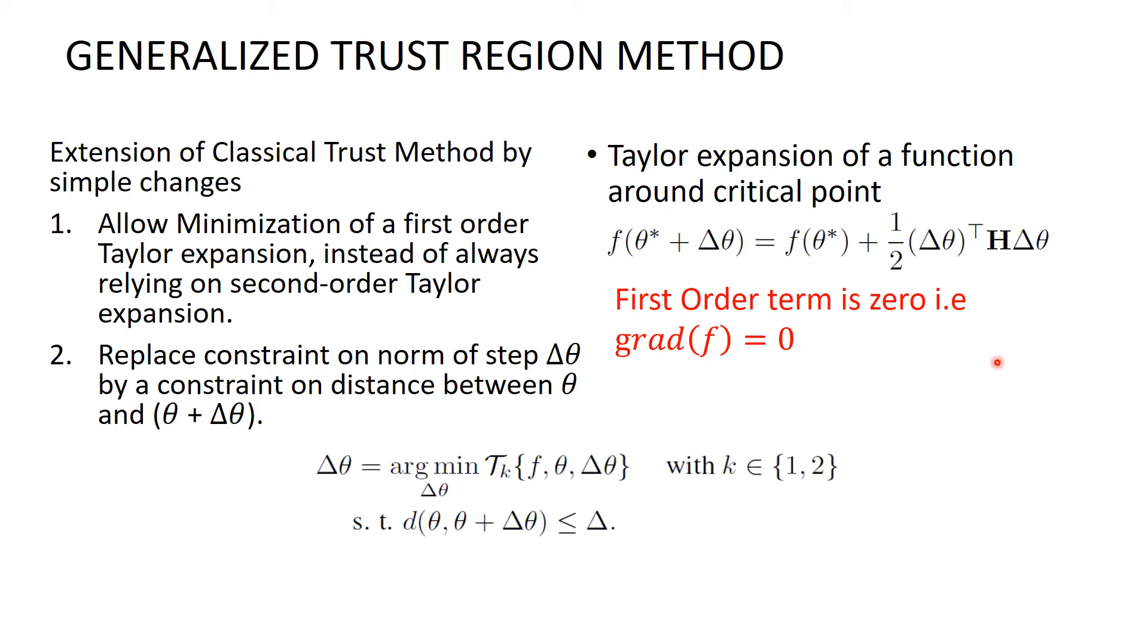Our optimization problem is given as this expression such that distance between theta and theta plus delta theta is less than some delta, where delta is some small real number.